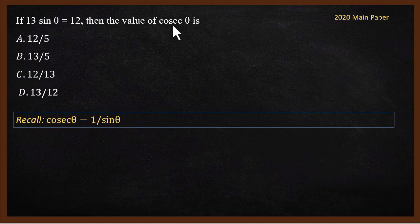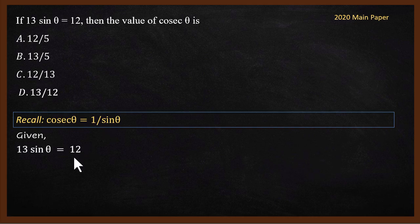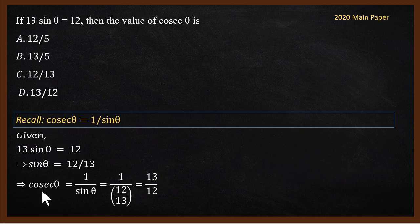What is the value of cosθ if 13 sinθ equals 12? We use the relationship between cosθ and sinθ. sinθ can be written as 12 by 13. cosθ can be written as 1 by sinθ, which equals 1 by (12 by 13), which simplifies to 13 by 12.